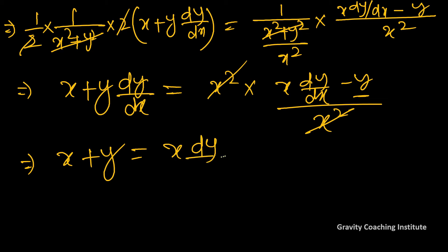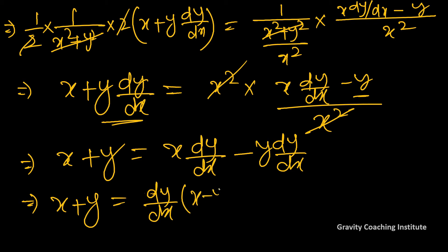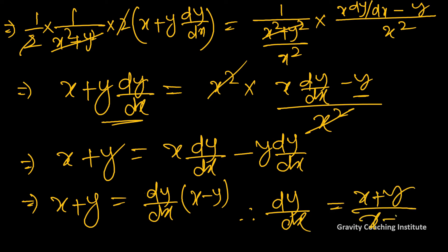और इस minus y को अगर हम left side में लाएंगे तो यह plus होगा, और x dy upon dx को right side लाएंगे तो यह minus होगा। x plus y equal to dy upon dx common लेंगे, so therefore dy upon dx equal to x plus y upon x minus y. Hence proved. Thank you.